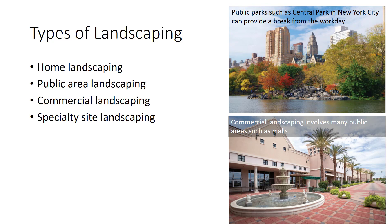Commercial landscaping is done at shopping malls, banks, churches, restaurants, and other places. Commercial landscaping should be functional and safe. Specialty landscaping includes gardens and zoos or botanical gardens, where special designs are used to establish a specific habitat, or a golf course where landscaping is used to provide obstacles for the game and aesthetic beauty.